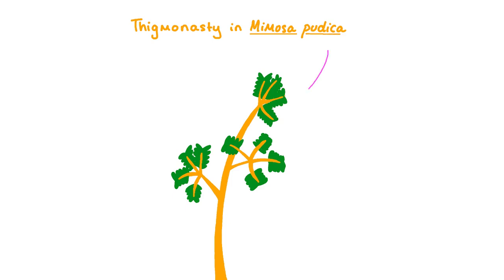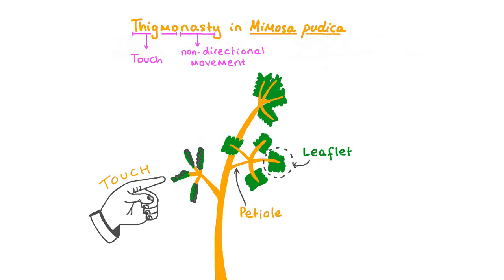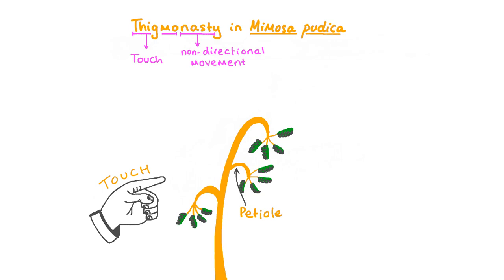Interestingly, some plants like the Mimosa pudica are incredibly sensitive to touch. The leaflets of Mimosa pudica are able to snap shut in a matter of mere seconds in response to a stimulus like being touched. This response is called thigmonasty. The suffix 'nasty' refers to the fact that this is a non-directional response, and the prefix 'thigma' refers to touch. No matter the direction from which Mimosa is touched, the leaflets always fold upwards from their undisturbed horizontal position, and the petiole always droops downwards.